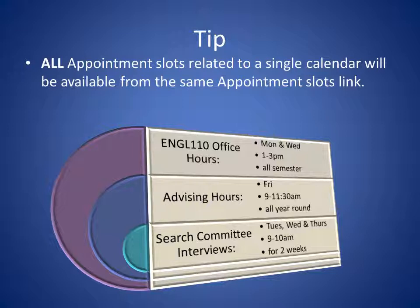Here are some tips. All appointment slots are related to a single calendar and will be available from the same appointment slots link. If you like this feature, think about making appointment slots for specific purposes — for example, E110 office hours Monday and Wednesday from 1 to 3 all semester, advising hours Friday from 9 to 11:30 all year, or search committee interviews Tuesday through Thursday from 9 to 10 a.m. for two weeks. Using descriptive titles helps people know what they're signing up for, and lets you block your time so you're not switching between E110, advising, and search committee in the same morning.